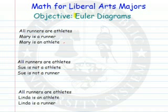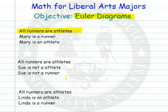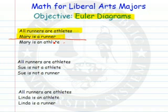In this video, we're going to look at what are called Euler Diagrams. Euler Diagrams are used to analyze arguments. The arguments are a set of statements called the premise. In my first case, a premise: all runners are athletes; Mary is a runner. Then there's another statement called the conclusion that hopefully follows from the premise. So we put our premises first, draw a line, put our conclusion, and we analyze the argument.